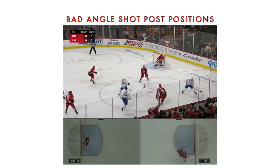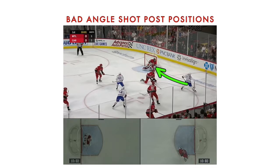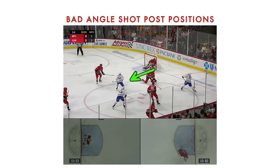Why I think it's important to use it is in case there's a pass option. You can see here he not only has a shot option, but he could also pass it to this guy. By going into a reverse VH, you're already down in the butterfly and square to the shooter — he's super tall here, eliminating that top-shelf play. And in case that pass does happen, he can just bump off that post and get there, which we'll see in the next clip.